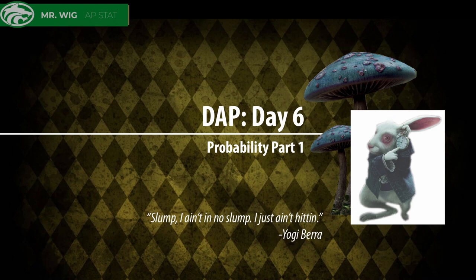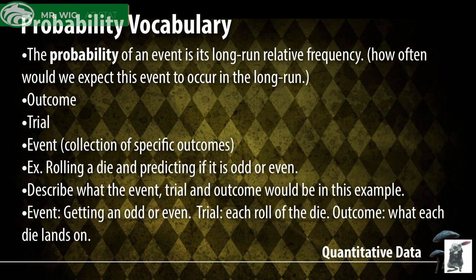Today we are going to look at chapter 14, probability. This is our first chapter on actual probability. This is going to be an introduction of sorts to some of the most basic probability. We are going to look at just a few things, a little bit of vocabulary, and kind of go from there.